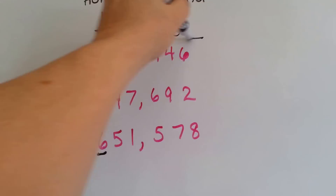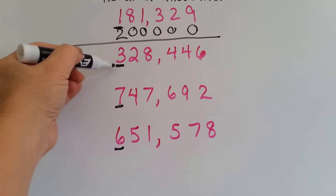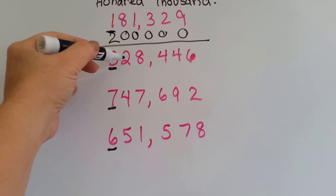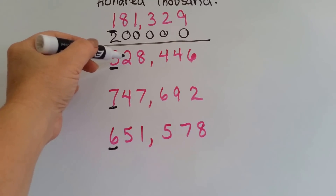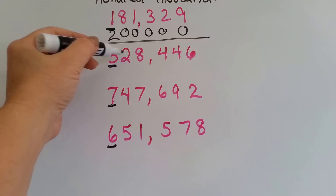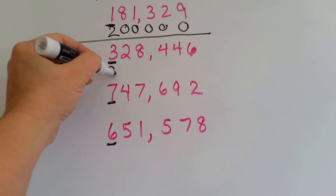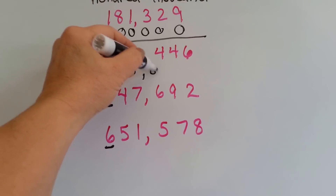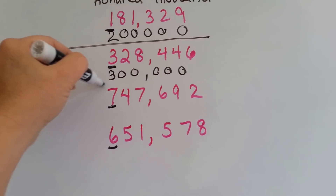Let's try it again. This is the place value we're rounding to. The number to the right is a 2. Now 5 says to go up — is this bigger than 5? No. 2 is going to make the 3 stay the same. 2 is finished doing his job and he and everybody else turns into a 0.